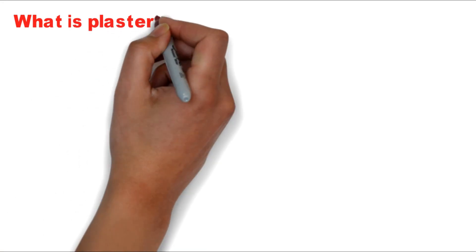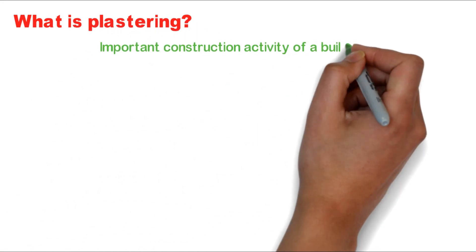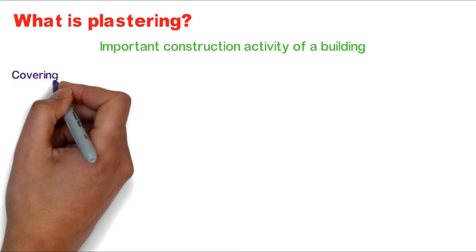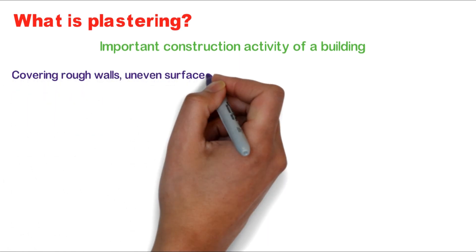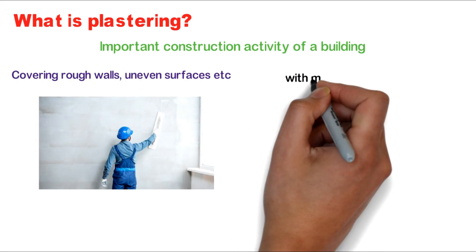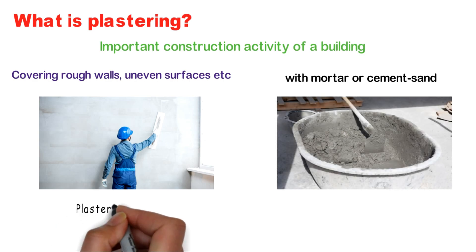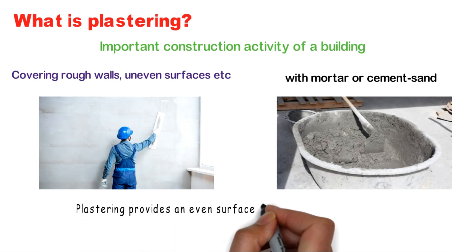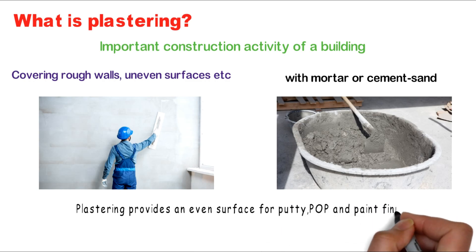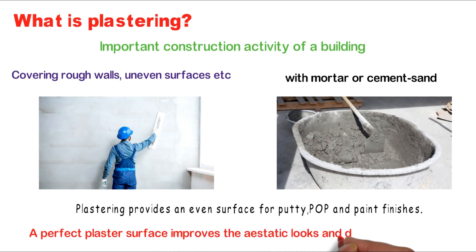What is plastering? Plastering is one of the most important construction activities of a building. It is a method of covering rough walls and uneven surfaces with mortar of cement and sand. The plastering provides an even surface for putty, POP and paint finishes. A perfect plaster surface improves the aesthetic looks and durability of buildings.